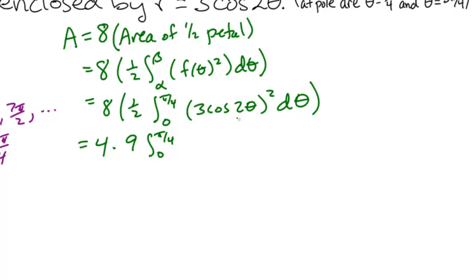Remember, to simplify cosine squared, we want to use the half angle formula. So that's one half, 1 plus cosine of 4 theta d theta, so we can actually do the integral.